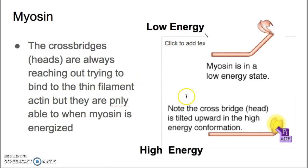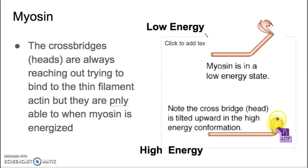Myosin has a low energy state and a high energy state. The low energy state is bent both at the tail and at the head. The high energy state is kind of straight out. In the high energy state, there's an ADP and a phosphate, because ATP has transferred its energy to the myosin heads. These myosin heads are also called cross bridges because they form the bridges between the myosin and the actin.